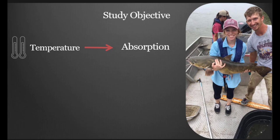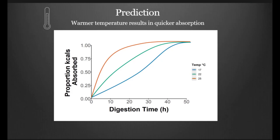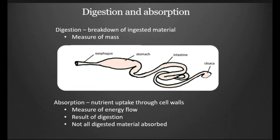The second part of my project was to actually look at temperature's effect on absorption efficiencies. We predicted that these warmer water temperatures would actually result in quicker absorption. It's important to define digestion and absorption here. Our definition of digestion is just the physical breakdown of ingested material. This is occurring throughout the entire alimentary canal, and it's a measure of mass through that time or through that period. Absorption, on the other hand, is just the nutrient uptake. It's occurring in the cell walls, and it's primarily occurring in the intestines. It's a measure of energy flow. It's a result of digestion. However, it's important to note that not all this digested material will actually be absorbed by the fish.